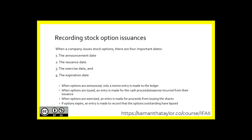Recording stock option issuance. When a company issues stock options there are four important dates: the announcement date, which is when the options are announced and only a memo entry is made to the ledger; the issuance date, when the options are issued and an entry is made for the cash proceeds and/or expense from that issuance; the exercise date, when options are exercised and an entry is made for the proceeds from issuing shares; and the expiration date, when an entry is made to record the options outstanding that have lapsed.